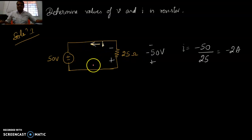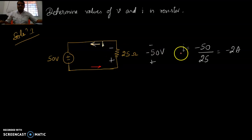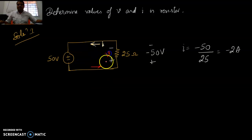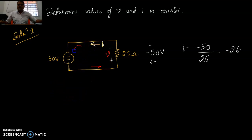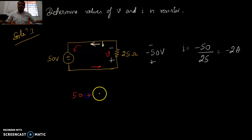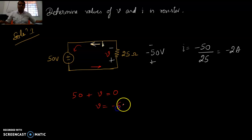The current direction is given; based on the direction of the current, the polarity is mentioned — plus and minus. If we apply KVL in this closed path, moving like this, it will be 50 because the first sign is plus and here also the first sign is plus, so V equals 0, and we can say V equals minus 50.